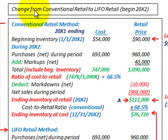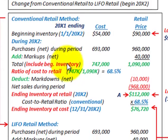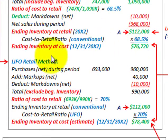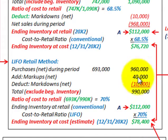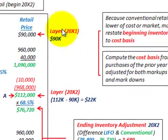Here we're going to go through a basic example of how we change from the conventional retail inventory method to the LIFO retail inventory method, making this change at the beginning of year 20X2. We're going to calculate ending inventory using both the conventional retail method and the LIFO retail method, then compare those ending inventories to determine what type of adjustment we have to make.